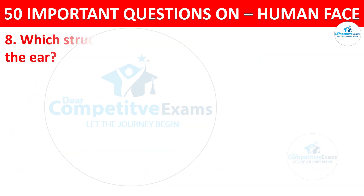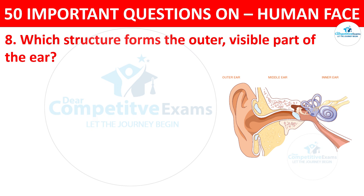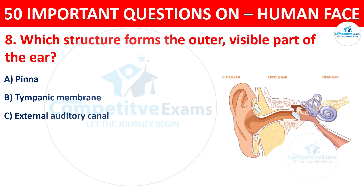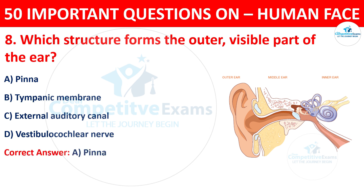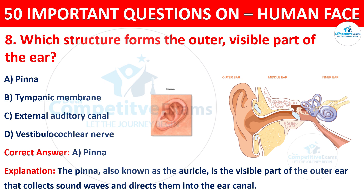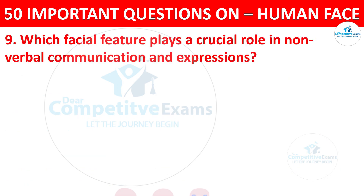Question number eight: which structure forms the outer visible part of the ear? The options are pinna, tympanic membrane, external auditory canal, or vestibulocochlear nerve. The correct answer is A, pinna. The pinna, also known as the auricle, is the visible part of the outer ear that collects sound waves and directs them into the ear canal.